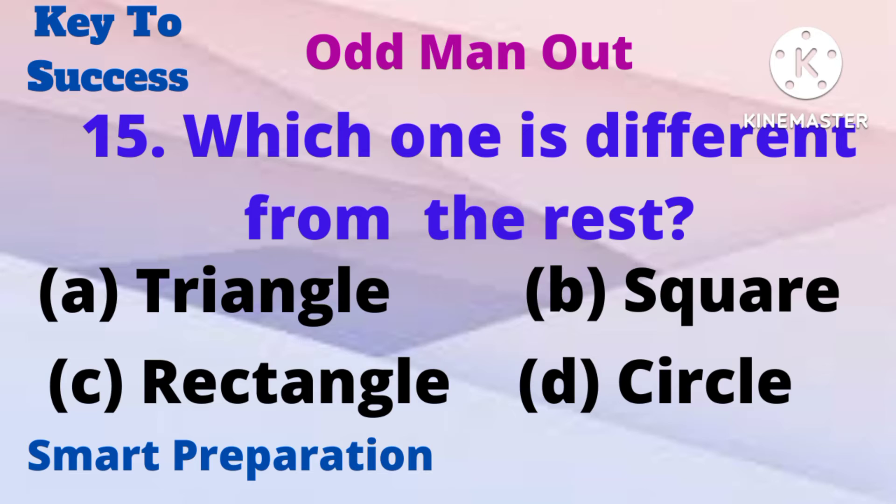Which one is different from the rest? A) triangle, B) square, C) rectangle, D) circle.